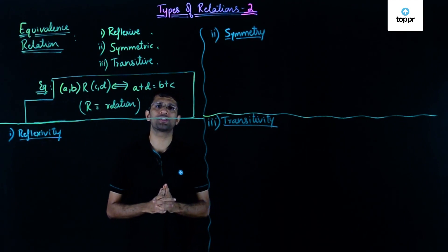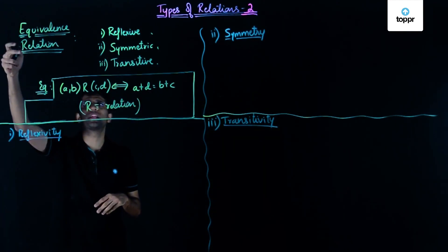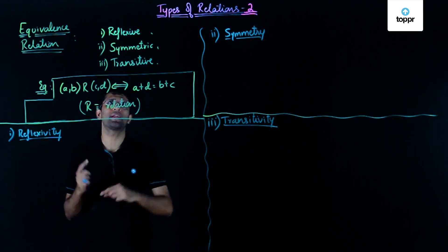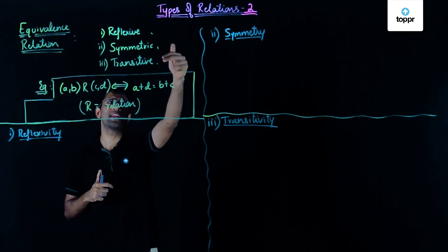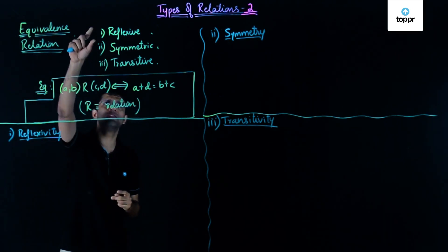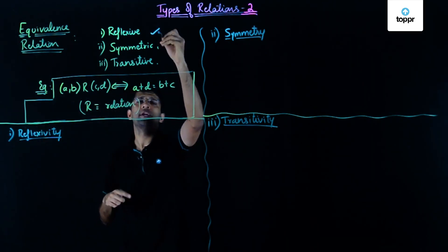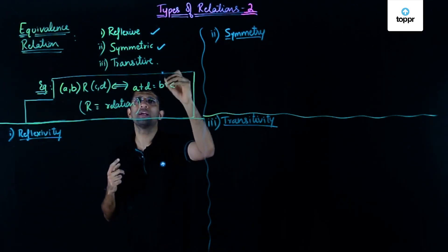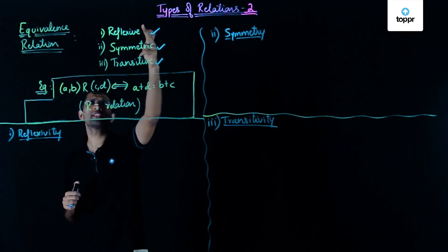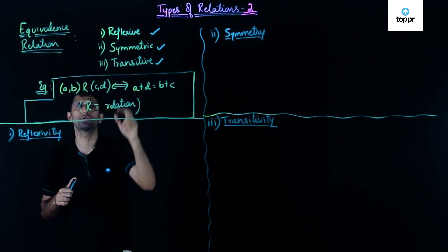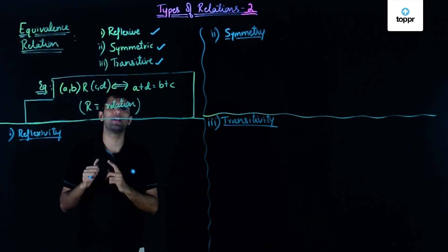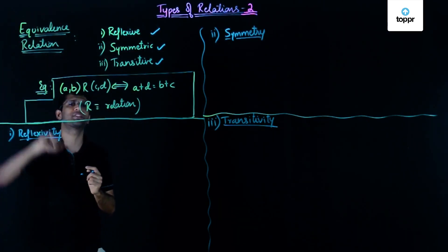Continuing our study of types of relations, let us now look at what is an equivalence relation. An equivalence relation is one that is reflexive, symmetric, as well as transitive. So whenever a given relation is reflexive, symmetric, and also transitive — that is, all three properties are satisfied — we say that that relation is an equivalence relation.